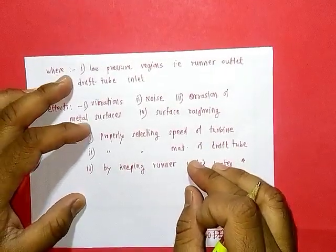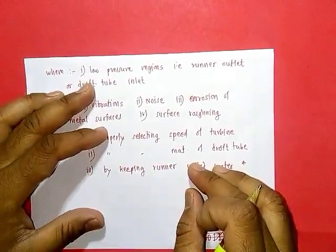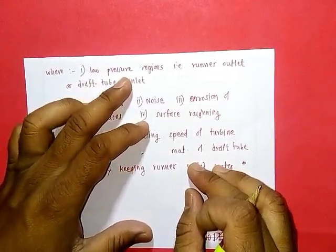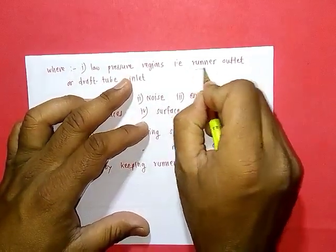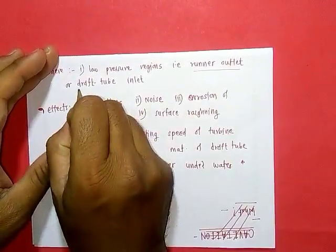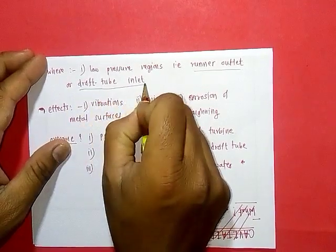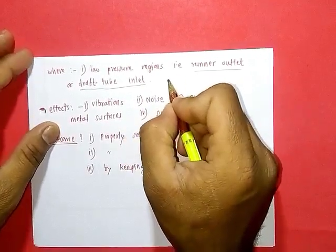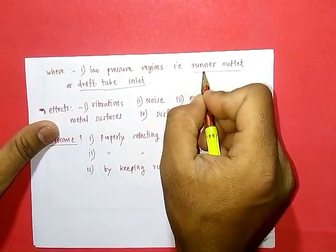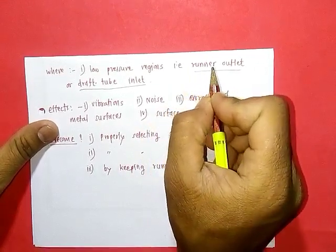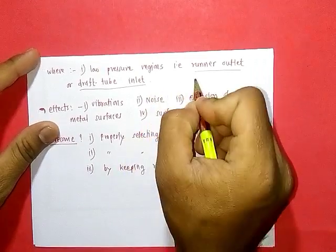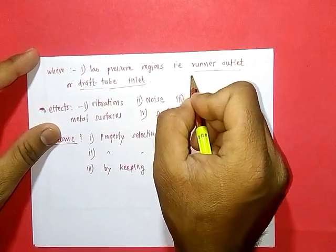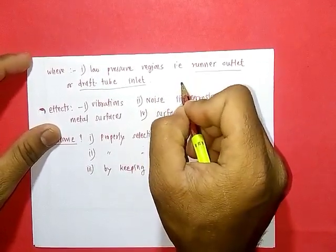These vapor bubbles are formed at low pressure regions. Within the turbine, low pressure regions are located at the runner outlet and draft tube inlet. At these two regions, when pressure drops below the saturation pressure corresponding to the surrounding temperature, vapor bubbles are formed — this is the formation step. These bubbles then grow in size.